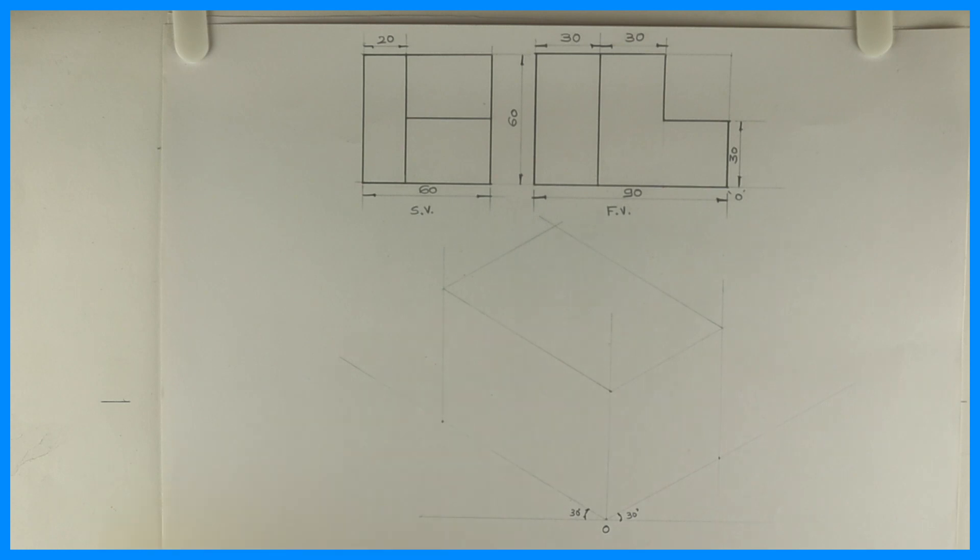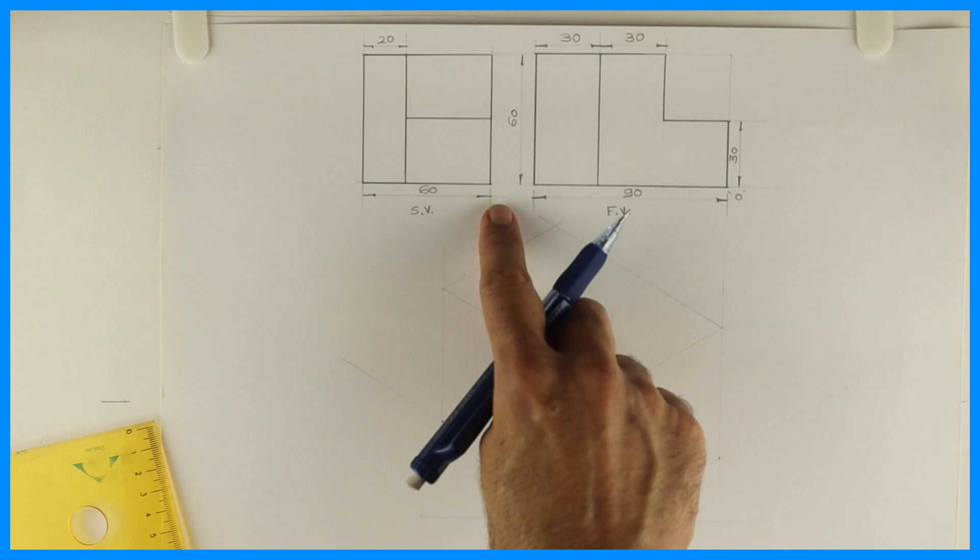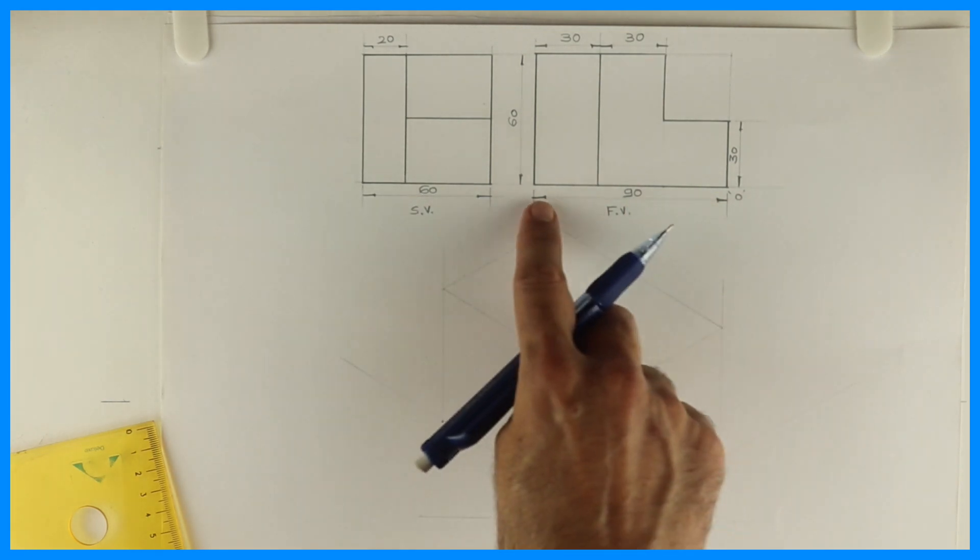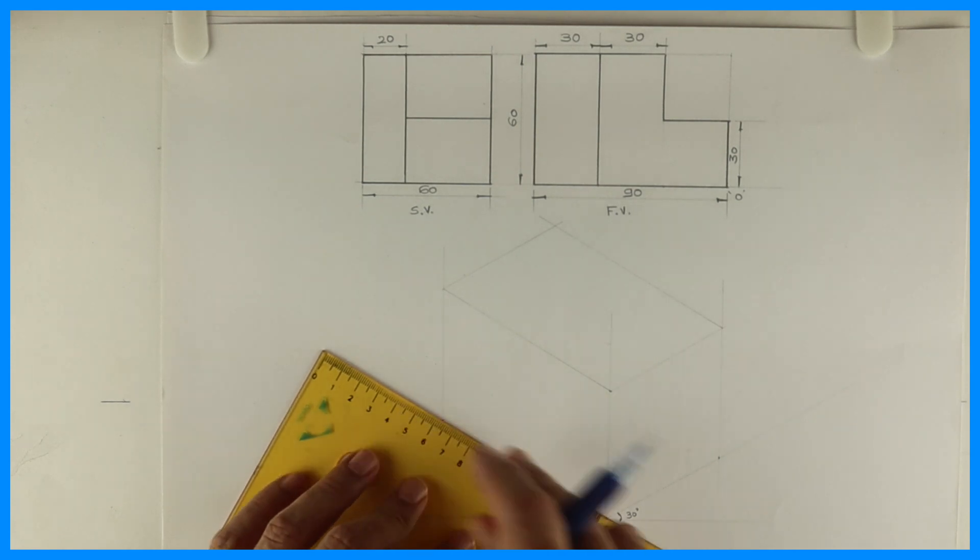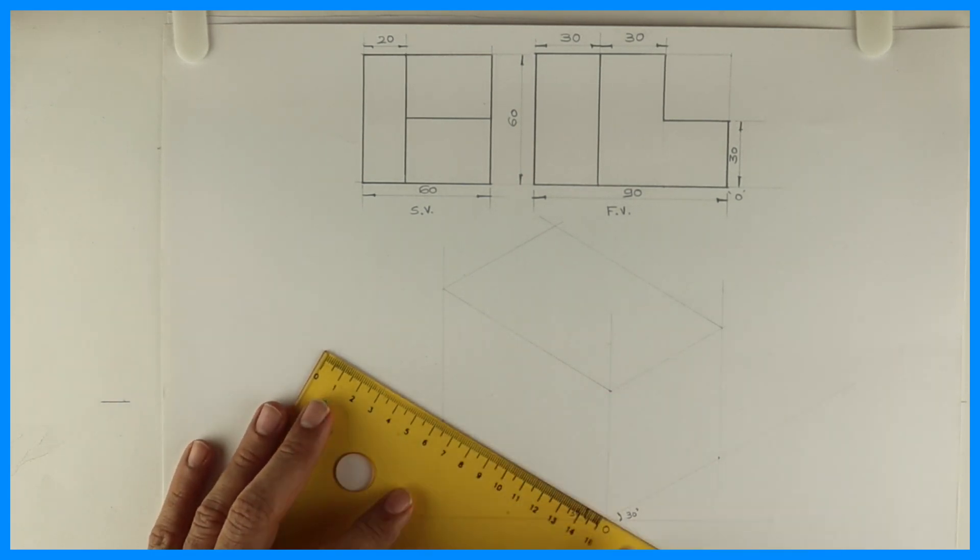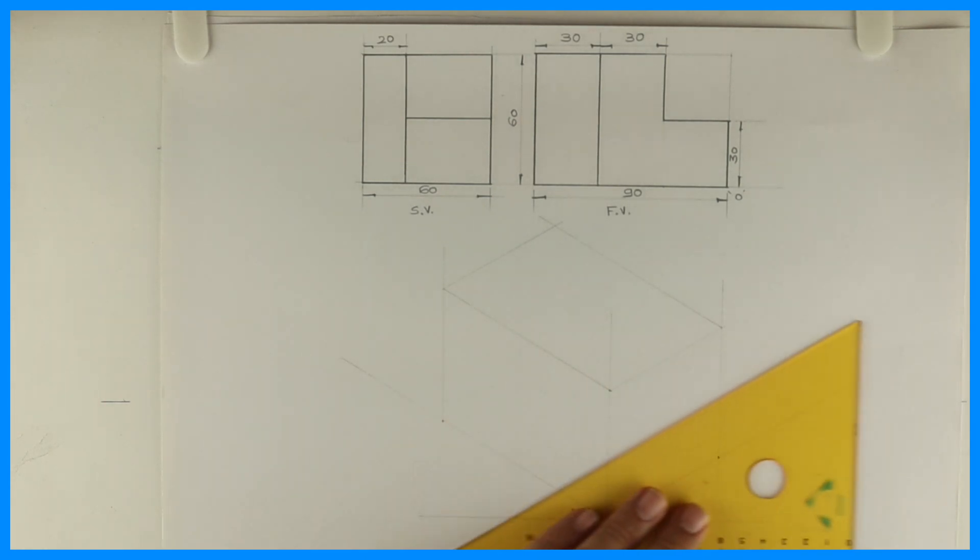Now today we will see this sum where you will see front view, side view. Length is 90, height is 60, width is 60. So first we will take 90 on the left side because 90 is on the left side of O. Height is 60 and width is 60.